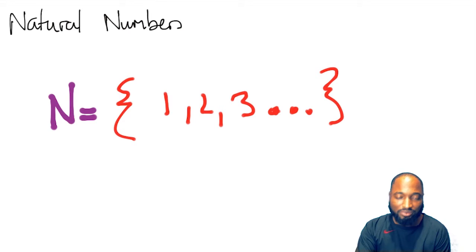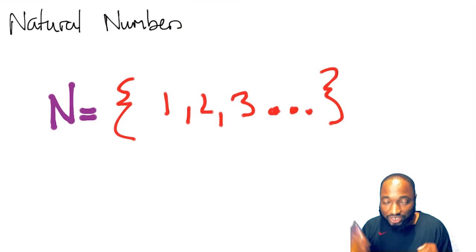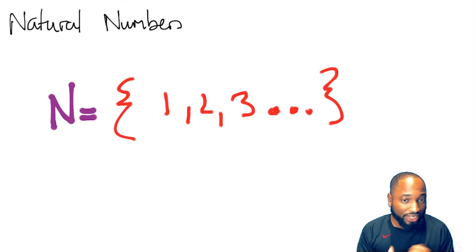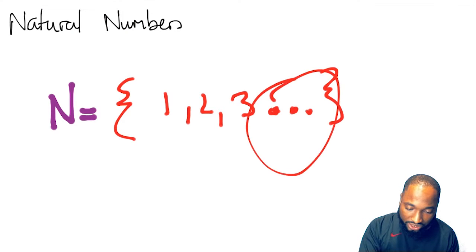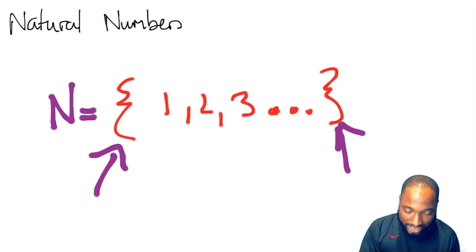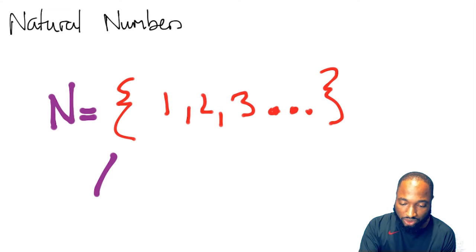Natural numbers are counting numbers. If you start counting something: one, two, three, those are natural numbers. Notice zero's not there—one, two, three. These three dots mean follow the same pattern, and these curly brackets mean 'the set of.' So the set of numbers one, two, three, and so on, following that pattern.